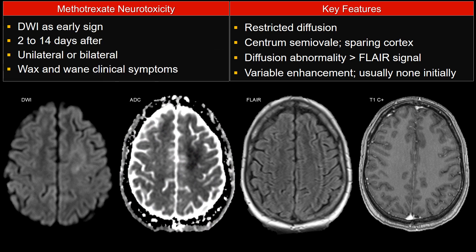This pattern is important to recognize if the history fits. In this case, the patient has ALL leukemia undergoing treatment and does receive mesotrexate as part of the treatment. The early sign you may see is diffusion abnormality — restricted diffusion — involving the classic location of the centricernal valley, and you may not see FLAIR signal.